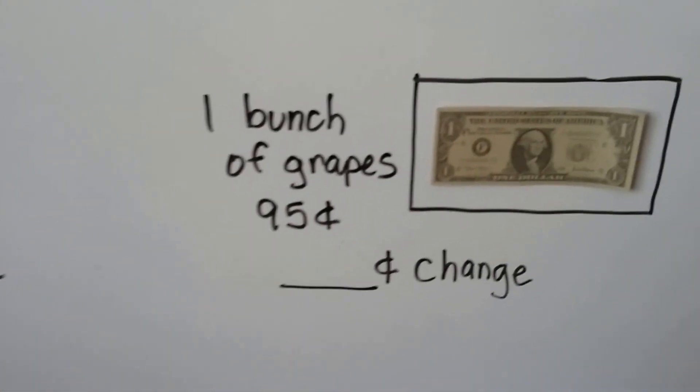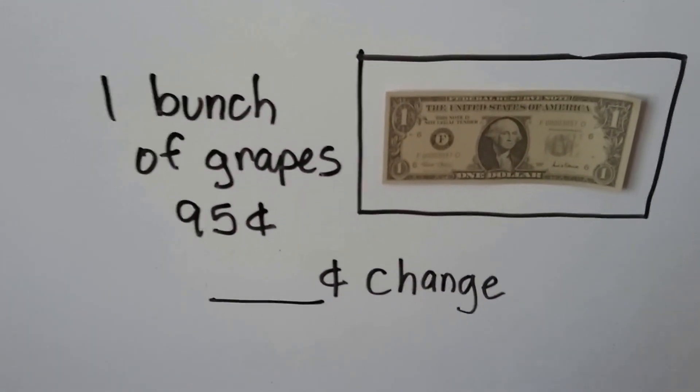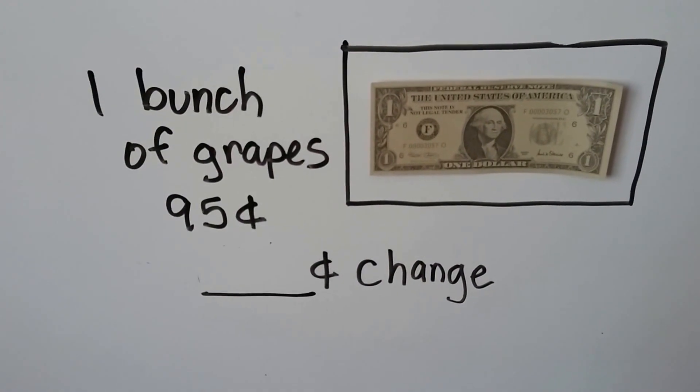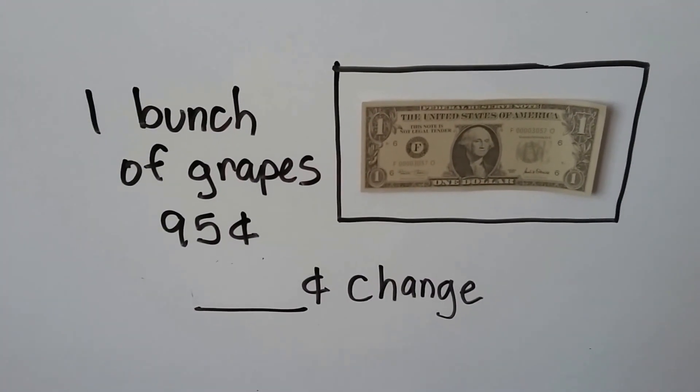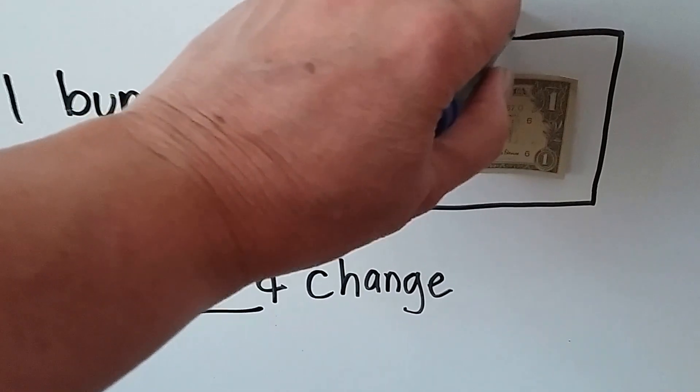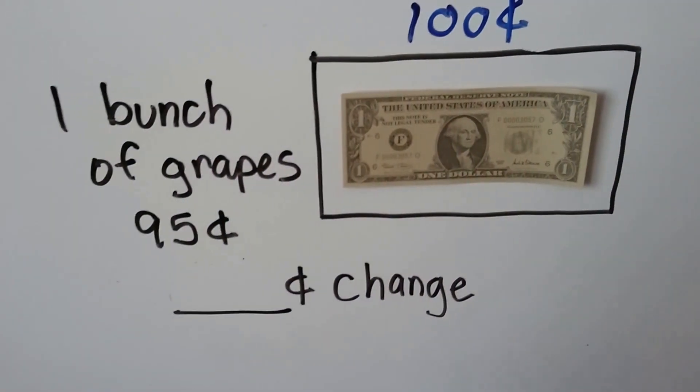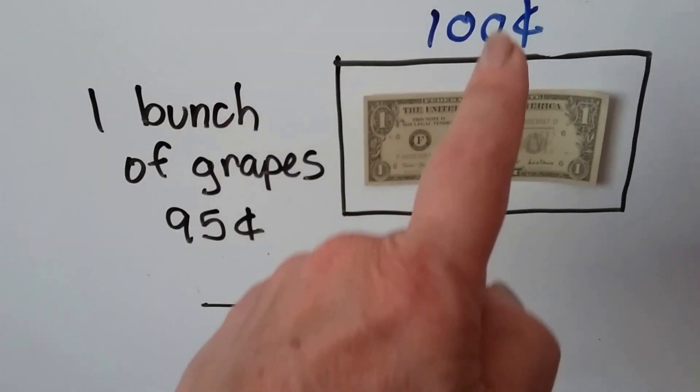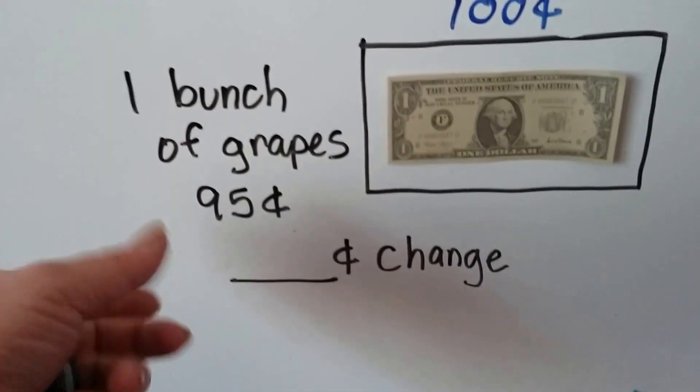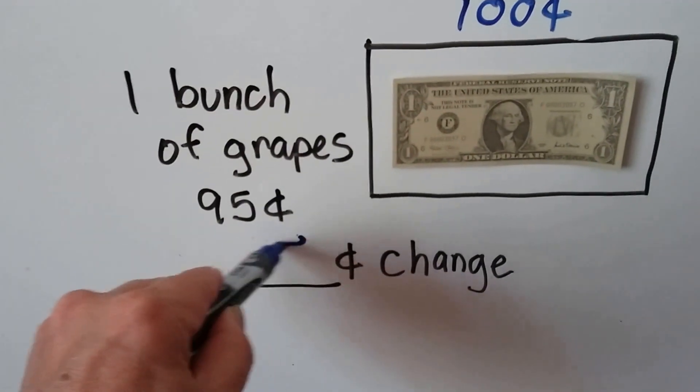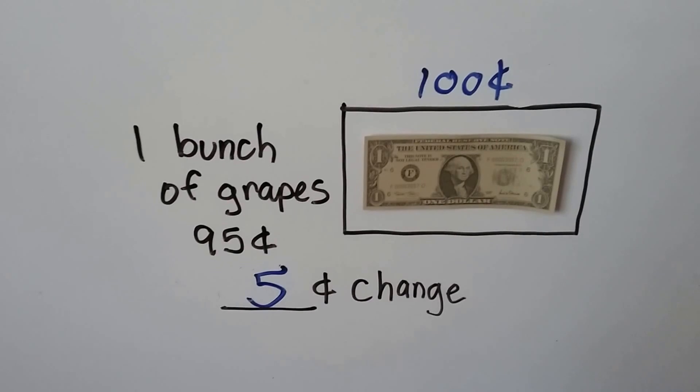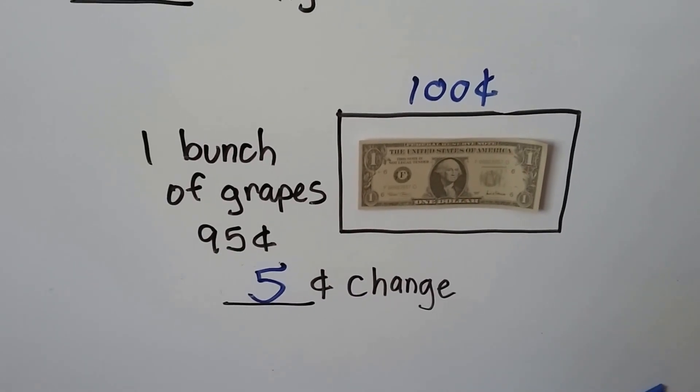How about here? We want to buy a bunch of grapes. They cost 95 cents for one bunch. We give the cashier a dollar. How much change should come back? Well, remember a dollar is 100 cents, right? We start with 95 and count up to 100: 96, 97, 98, 99, 100. That's five, five cents change. They could give us a nickel, couldn't they? They could give us five pennies.